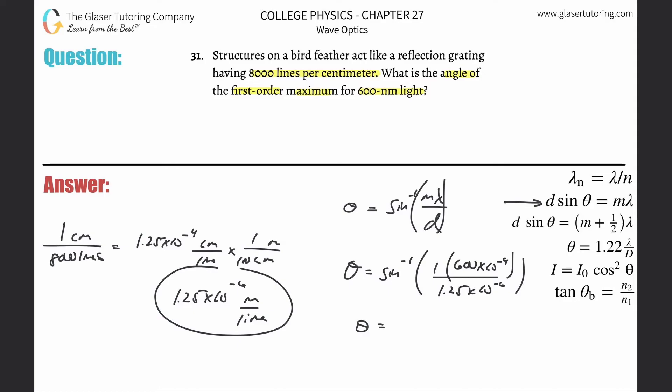Take out the calculator and go to town. Make sure it is in degree mode. 600 times 10 to the minus 9th, divided by 1.25 times 10 to the minus 6th.